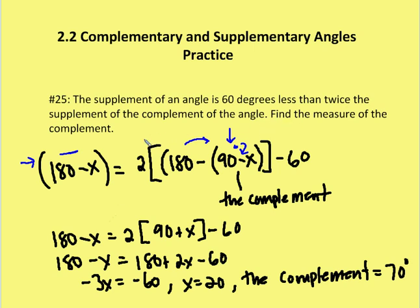We're trying to find the complement. So: 180 minus x equals 2 times (180 minus 90 plus x) minus 60, which simplifies to 180 minus x equals 2(90 plus x) minus 60, giving us 180 minus x equals 180 plus 2x minus 60. Solving: negative 3x equals negative 60, so x equals 20. But don't stop there — the question asks for the complement, which is 90 minus 20, or 70 degrees.